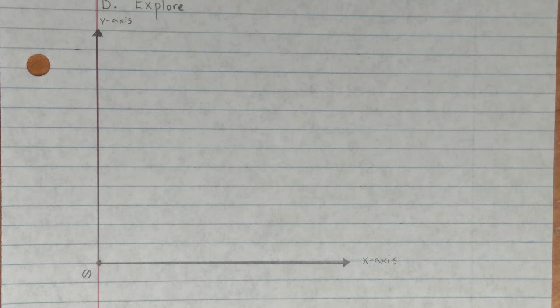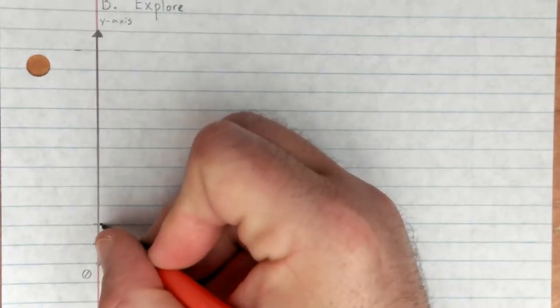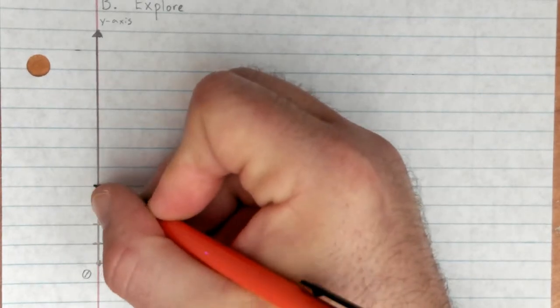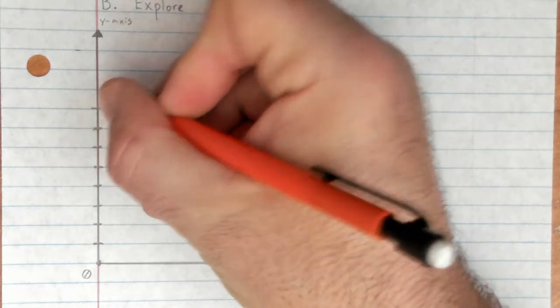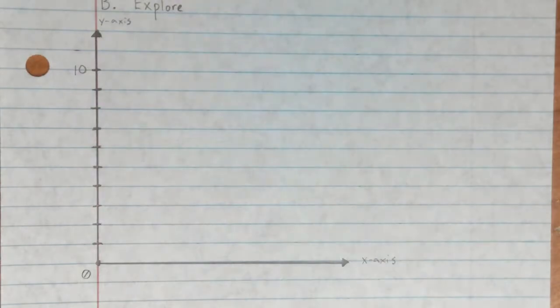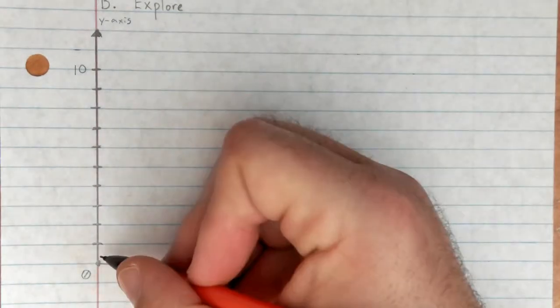Now labeling the y-axis is pretty easy because we've got the lines. One, two, three, four, five, six, seven, eight, nine, ten ought to do it. Okay, you can label every single one of these, but you really don't have to.